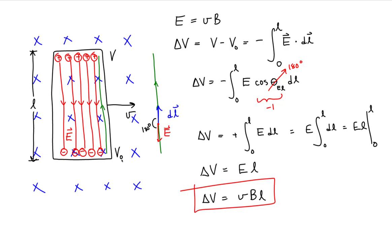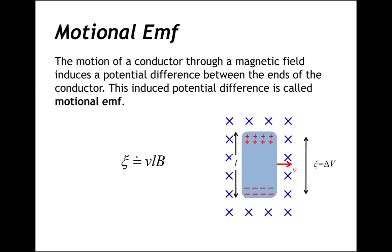Let's summarize this result. The motion of a conductor through a magnetic field induces a potential difference between the ends of the conductor. This induced potential difference is called Motional EMF. The Motional EMF is equal to the product of the conductor's speed in the magnetic field, the length of the conductor — taken to be the length perpendicular to the direction of motion — and the magnitude of the magnetic field.